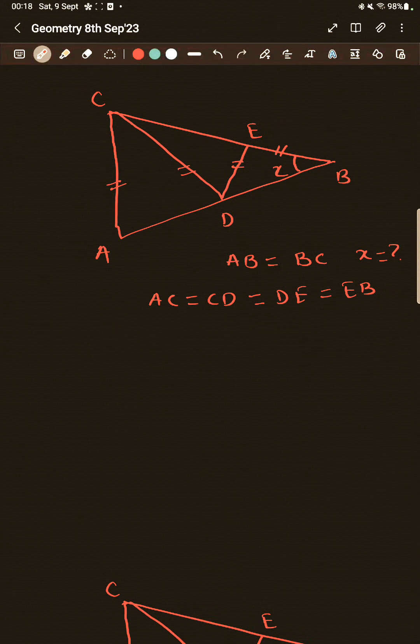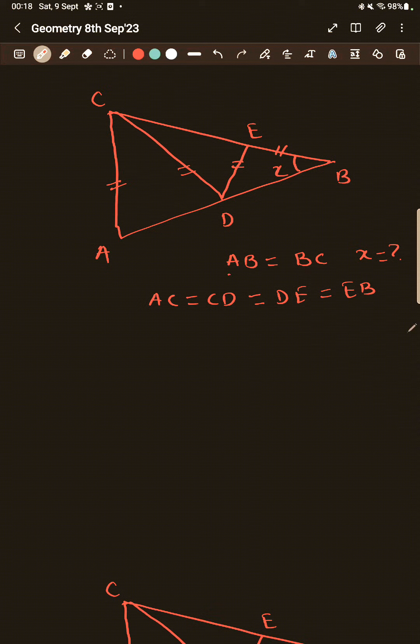Geometry question here. We have been given a triangle ABC. Now two conditions are given here. AB is equal to BC. These two sides are there, AB and BC.